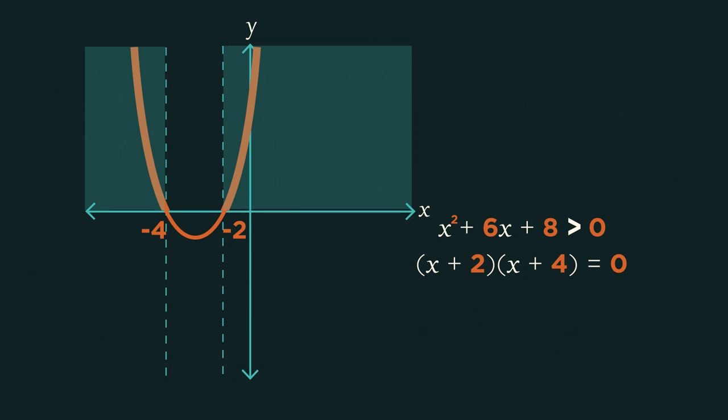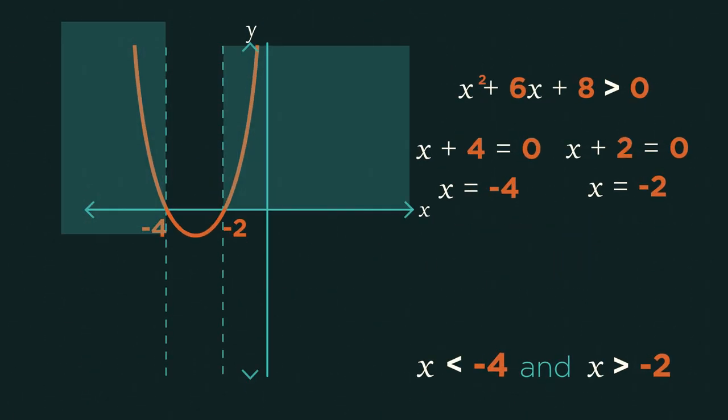This time, because we have two separate regions shaded, this means we have two separate inequality answers. Where x is less than negative 4 and where x is greater than negative 2.